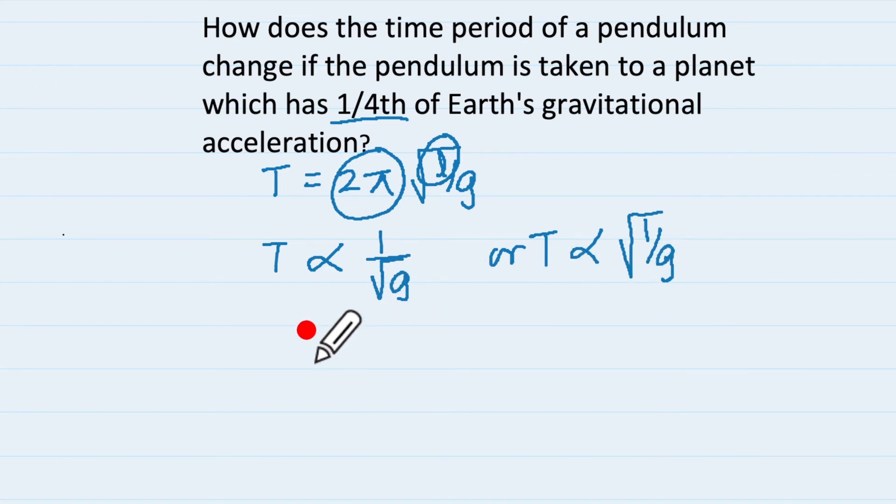However way you look at it, no problem. But now we will have t1 and we will have t2. So t1 upon t2 is going to become 1 upon root of g1 upon root of 1 upon g2 and that is going to become root of g2 upon g1.